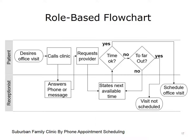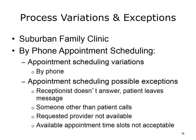The appointment scheduling variation used by the clinic appears to be by-phone scheduling. In your interactions with the clinic, the critical thing to discern is, is this the only variation used by the clinic, and what other variations occur? Process variations are processes used by the clinic. Process exceptions are errors or common odd things that occur during the process. Possible exceptions that may occur during the appointment scheduling process include the following: the receptionist doesn't answer, patient leaves message, someone other than patient calls, the requested provider is not available, and the available appointment time slots are not acceptable.